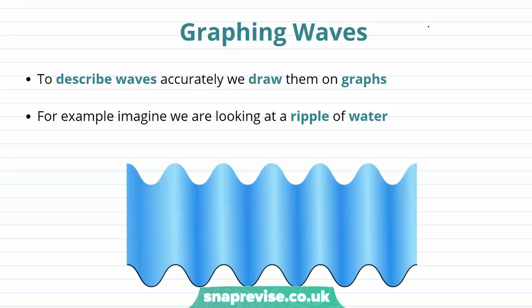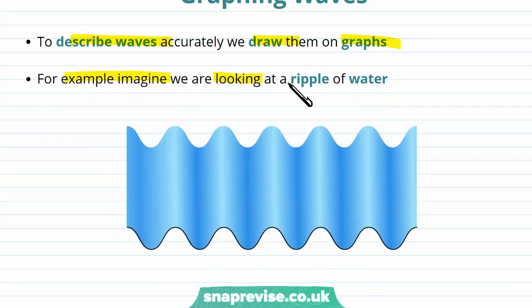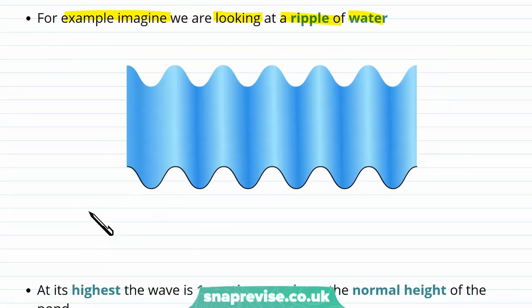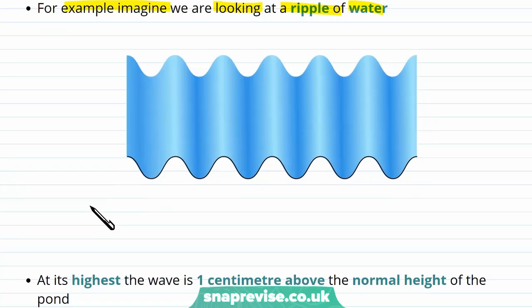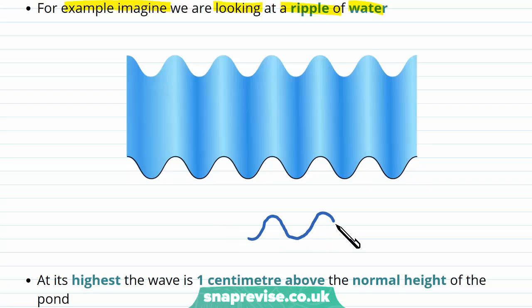To describe waves accurately we're going to want to draw them on graphs. For example, imagine that we are looking at a ripple of water. How are we going to put this ripple of water onto a graph? Well, first of all we take this ripple of water and we draw it as if we're looking directly from the side.